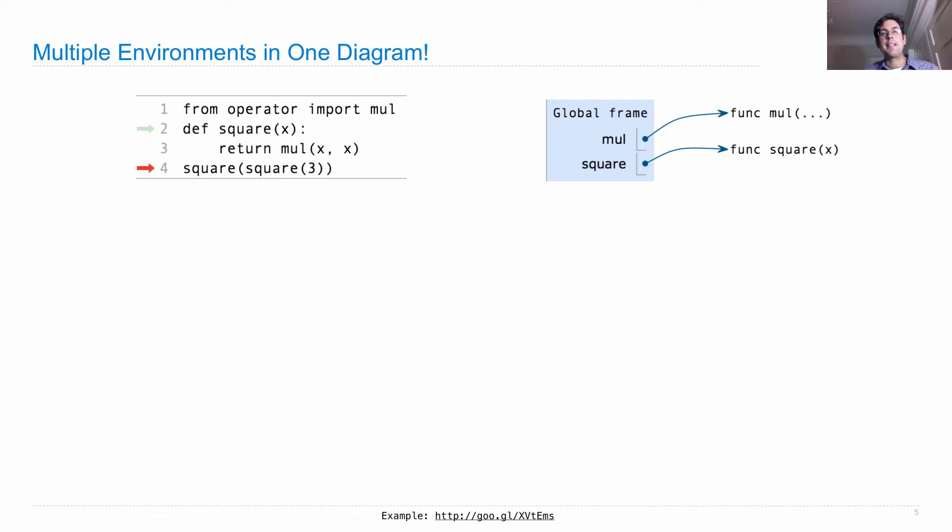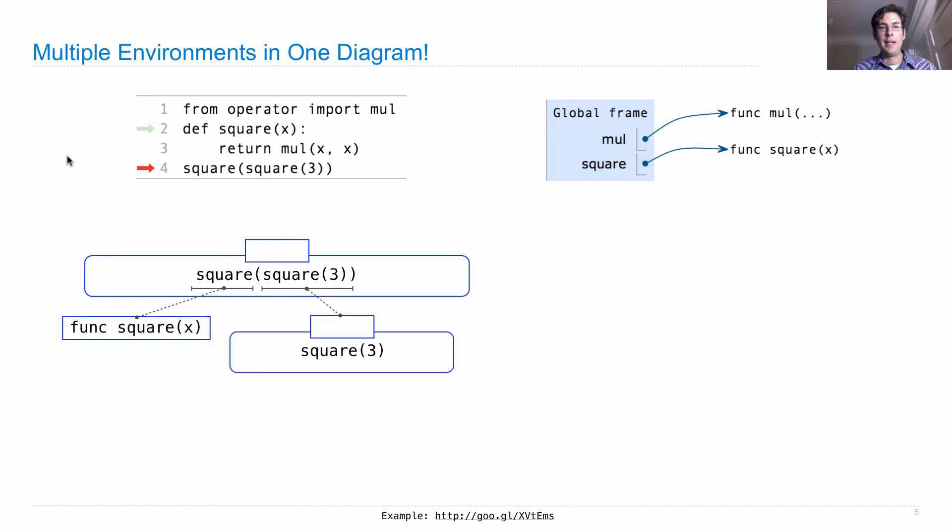So here's the example that I showed you last time that actually involves multiple environments in one diagram. From operator import mul, I define square as returning x times x, mul(x, x), and now I'm going to square the square of 3. Square of 3 is 9, square of 9 is 81. How do we get that 81? Well, what's going to happen is that x is going to refer to different values in different environments all in the same program. So we start out by evaluating square(square(3)) by evaluating its operator, which gives us the square function, its operand, which is square(3).